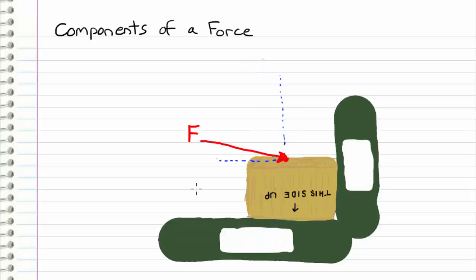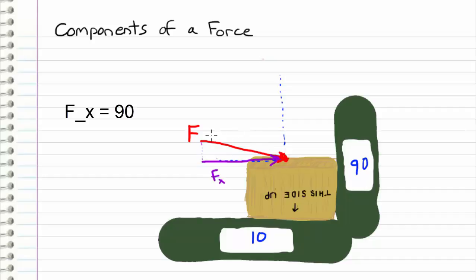Now let's look at a force oriented more toward the horizontal. This force will push the box more towards the right than downward, so the vertical right scale is going to have the larger number and the bottom scale the smaller number. If I project this force onto the axes, it has a component Fx in the x direction and a component Fy in the y direction. Because this angle is more oriented with the horizontal, Fx is going to be greater than Fy, which is reflected by our scale readings and the notion that the box moves more toward the scale on the right.